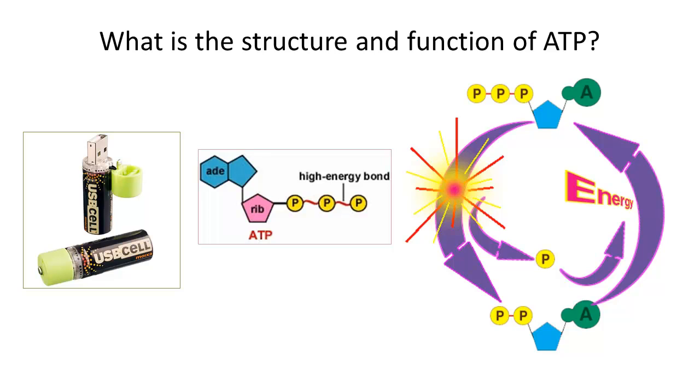First, ATP is the energy used to fuel a cell and its processes, like cell division or making enzymes. Similar to a rechargeable battery in your body, it is recyclable. More on that in a minute. Let's first tackle its important structure.